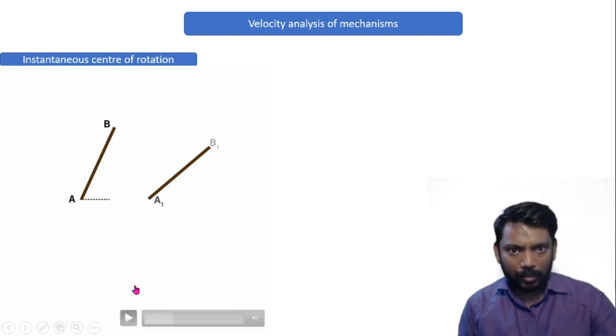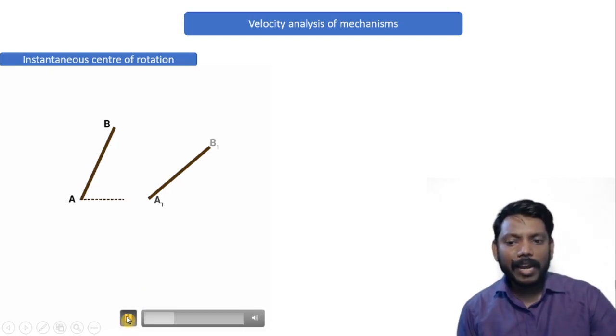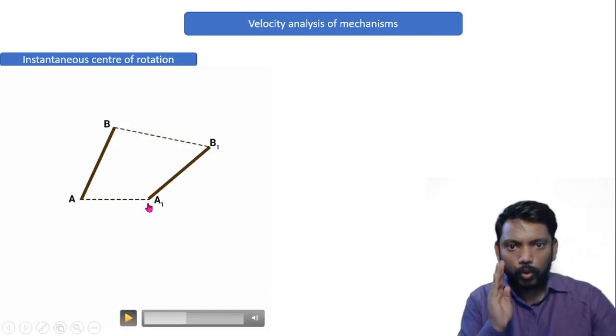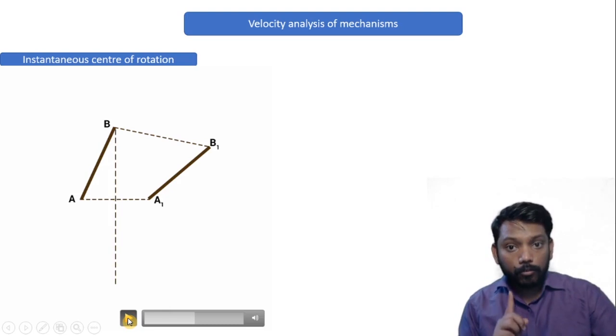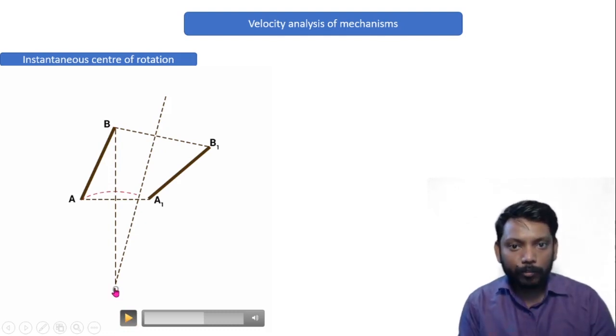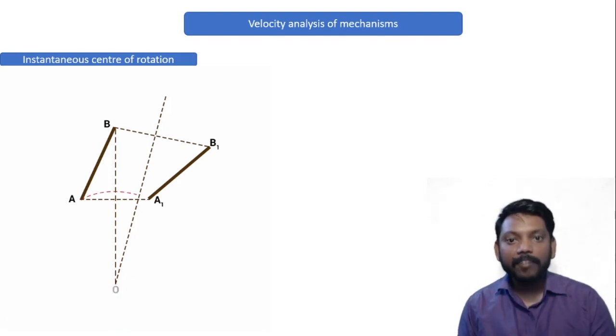So what do we do? For that, in order to locate the point, I am just going to join the point A with A1 and point B with point B1. Point A and A1, join the line, it will be perpendicular drop. In that way, I will draw another perpendicular drop to the line B, B1. Now we can observe that these two lines intersecting at this particular point. And that intersection point of both the perpendicular lines will become your ICR, that is instantaneous center of rotation.